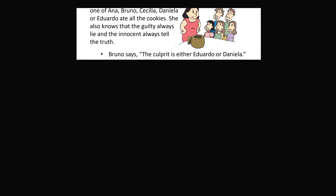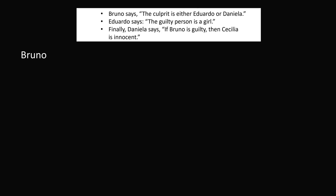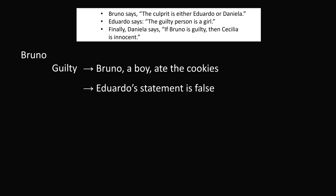Now let us analyze the three statements. We start with Bruno, who says the culprit is either Eduardo or Daniela. Let's suppose that Bruno is guilty of the crime. The guilty always tell false statements, and that would mean Bruno, a boy, ate the cookies. Now if Bruno, a boy, ate all the cookies, then Eduardo's statement that the guilty person is a girl would have to be a false statement. But if Eduardo is saying a false statement, that means Eduardo is guilty as well. So if Bruno is guilty, we have two people who are guilty — and we know that's not possible because only one person is guilty of eating all the cookies. So it's not possible that Bruno is guilty. We have a contradiction.